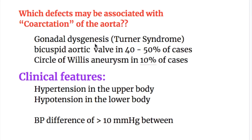Associated defects include: number one, gonadal dysgenesis and Turner syndrome; number two, bicuspid aortic valve in 40 to 50 percent of cases; and number three, circle of Willis aneurysms in 10 percent of cases.